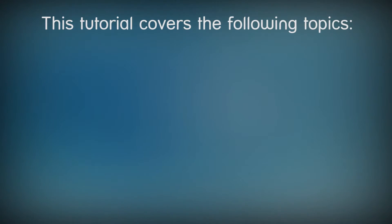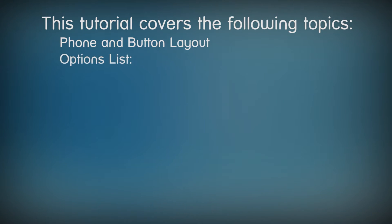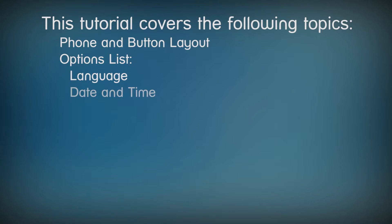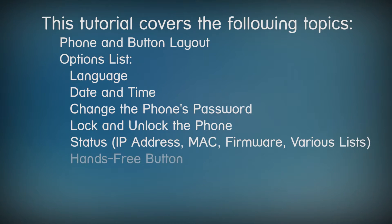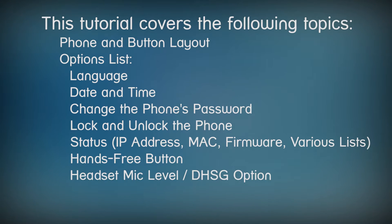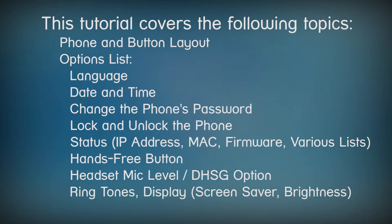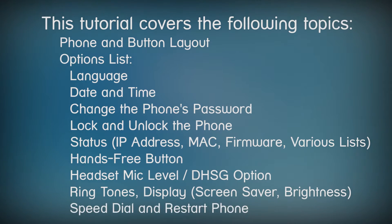In this tutorial, I'll cover the following topics. We'll take a quick look at the layout of the phone, then go through a series of options where you can choose a language, modify how the date and time are displayed, change the phone's password, lock and unlock the phone, check the status of the phone, define how the hands-free button works, adjust the headset microphone level, select DHSG, select a ringtone, change the screensaver and brightness settings, set up speed dial, and restart the phone.